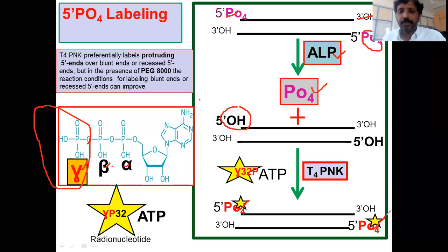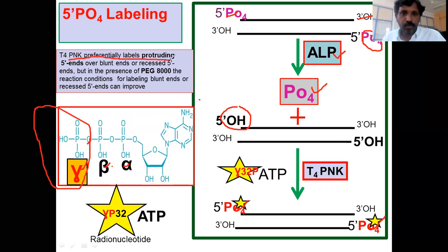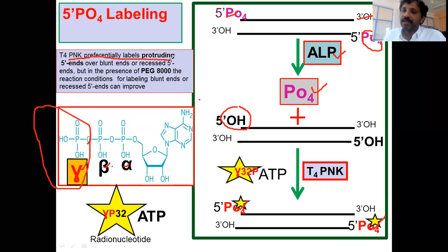So this is how you prepare the probes — they are very specific but sensitivity is less. One more important point: T4-PNK preferentially labels protruding ends. Whenever DNA has protruding ends, T4-PNK prefers those and they are easier to label. If you include PEG — polyethylene glycol — even T4-PNK can perform blunt-end labeling. Thank you all for listening. If you like it, please subscribe for regular updates.